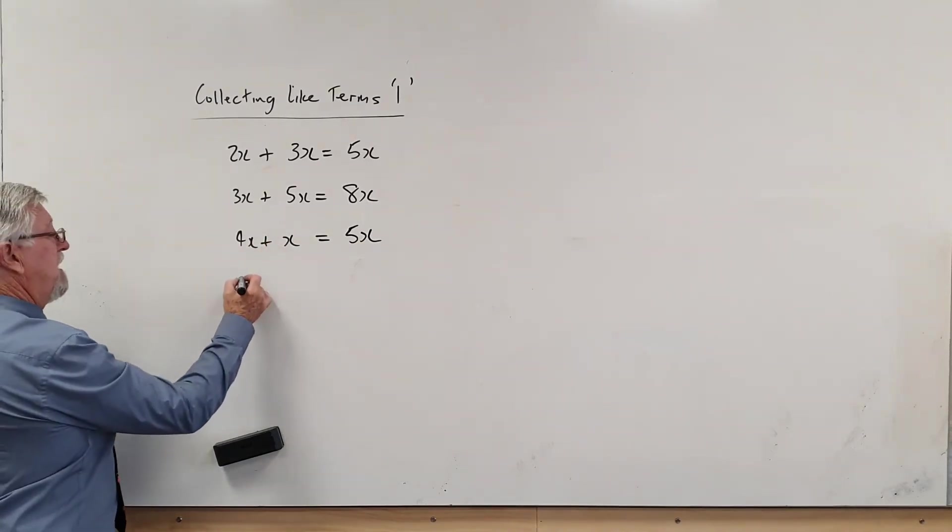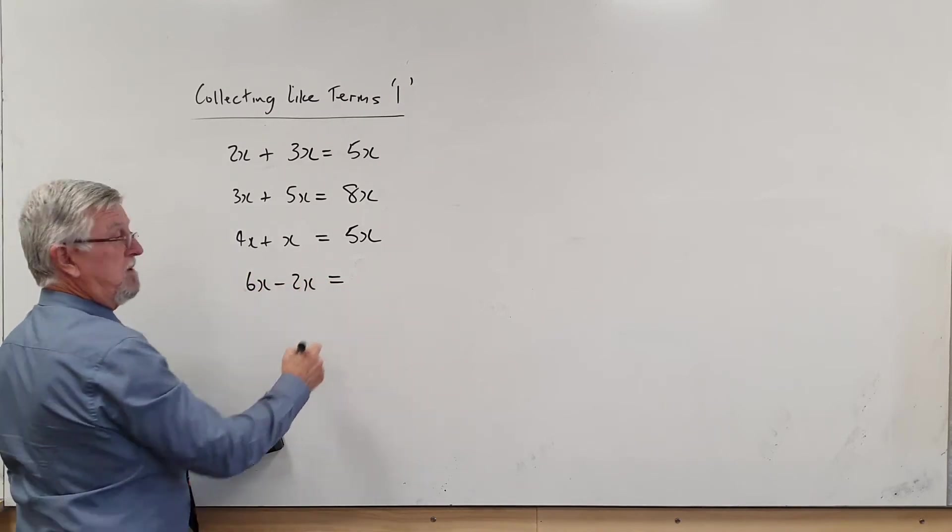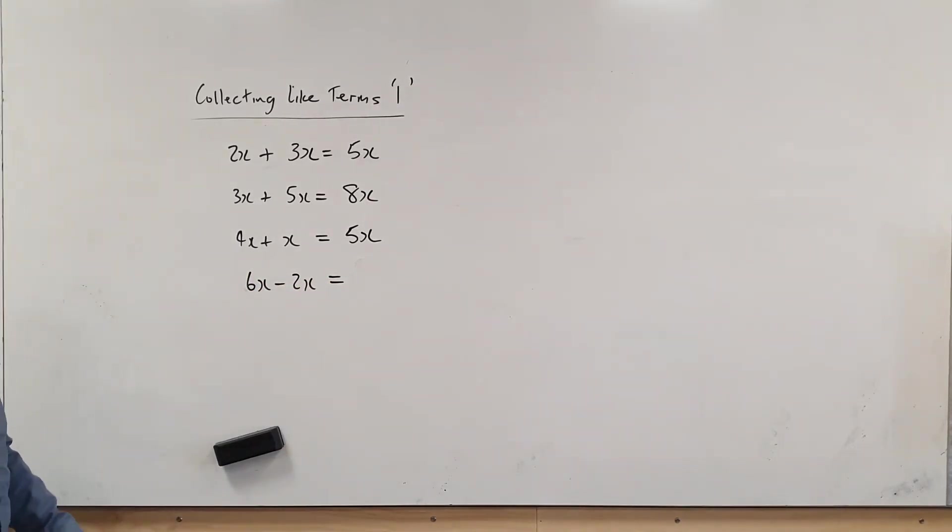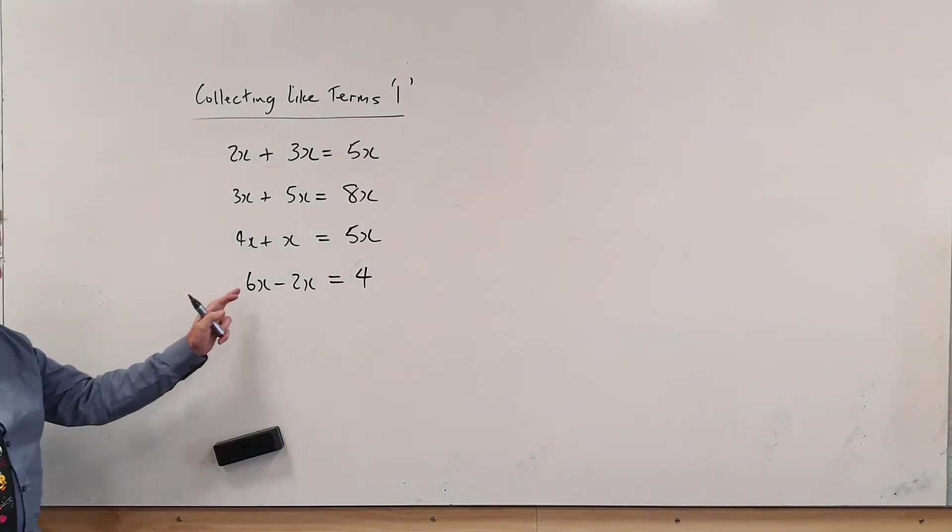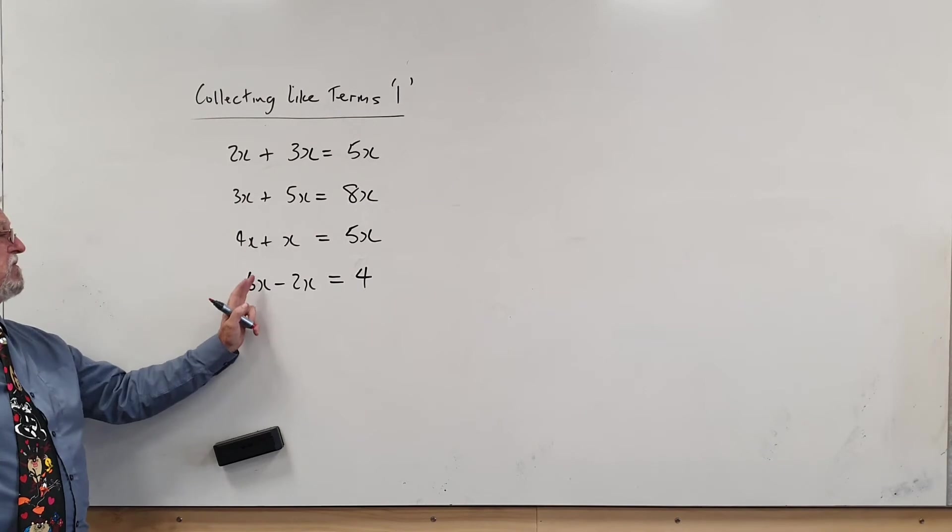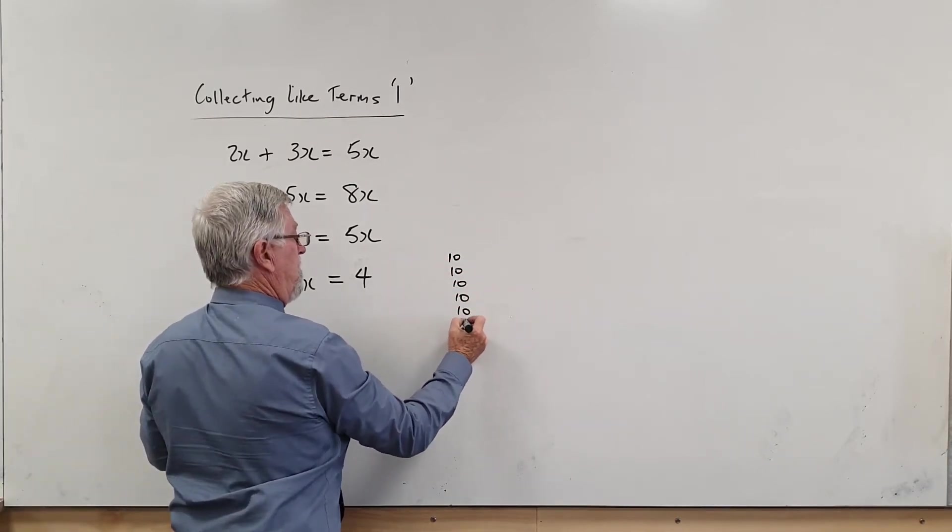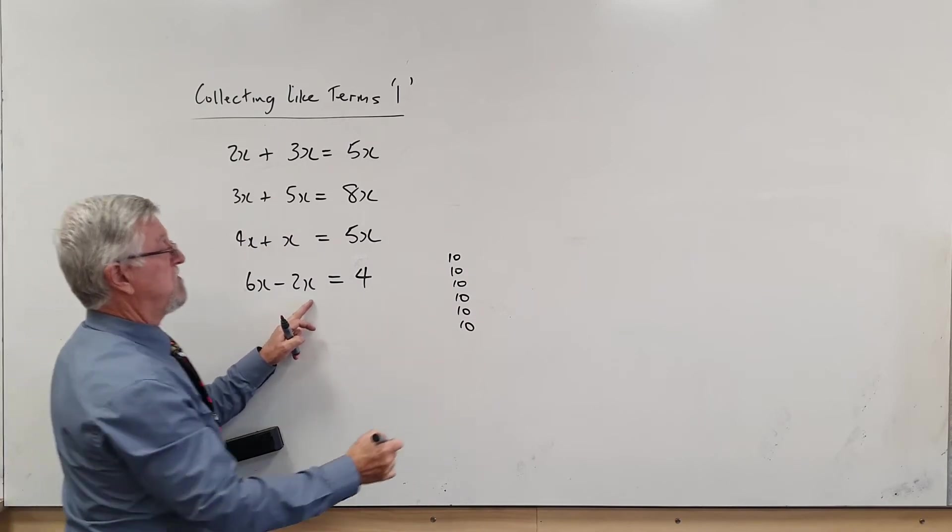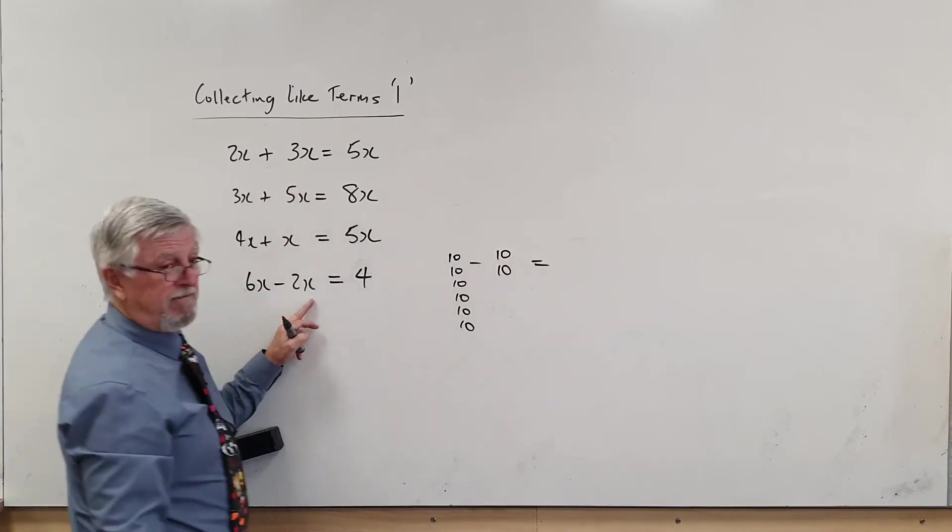What if I got subtraction? What if I had 6X take 2X? Now a lot of students get caught up and they go six take two is four, but it's not four. If this was ten, six lots of ten—one, two, three, four, five, six—minus two lots of ten, what do we get?